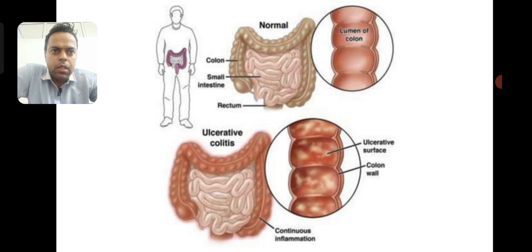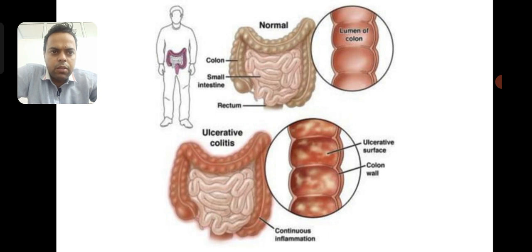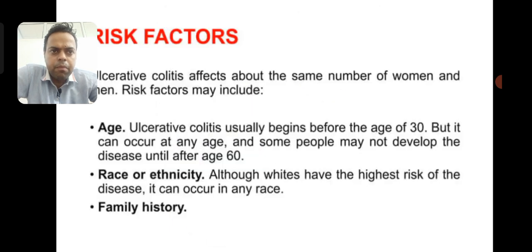These are the parts of ulcerative colitis on which ulcers can occur — that is the colon, rectum, and sigmoid colon. These are in the lower section. You can see the ulcerative surface on the colon wall, and there is continuous inflammation right below the rectum.